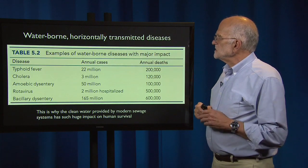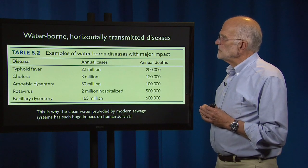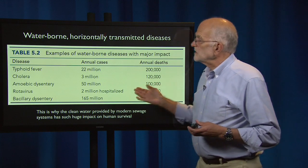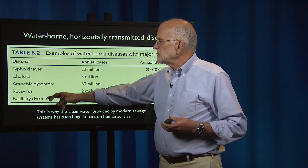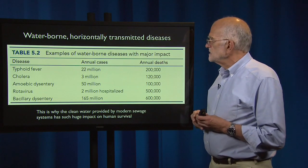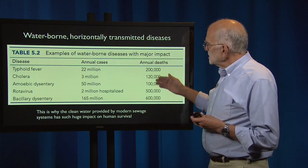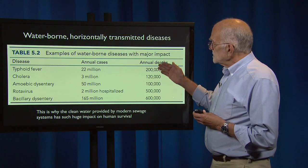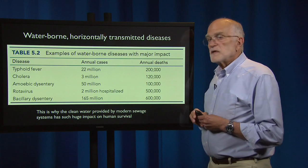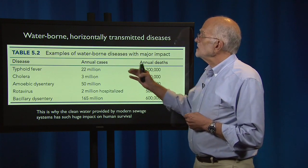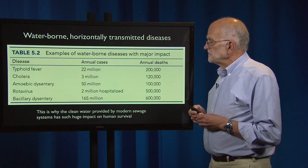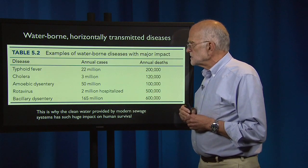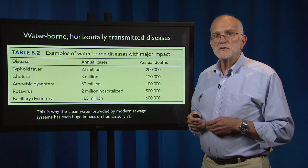Waterborne horizontally transmitted diseases have major impact. Among the major health problems on the planet are typhoid fever, cholera, amoebic dysentery, rotavirus, and bacillary dysentery. Annual deaths caused by these diseases continue at high levels — more than a million and a half deaths annually from waterborne diseases. This is why the clean water provided by a modern sewage system has such a huge impact on human survival.